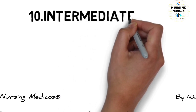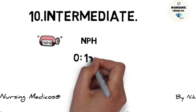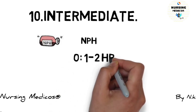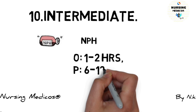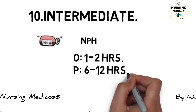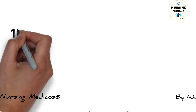Tenth one is intermediate acting insulin, that is NPH. Onset is 1-2 hours, and peak time is 6-12 hours.